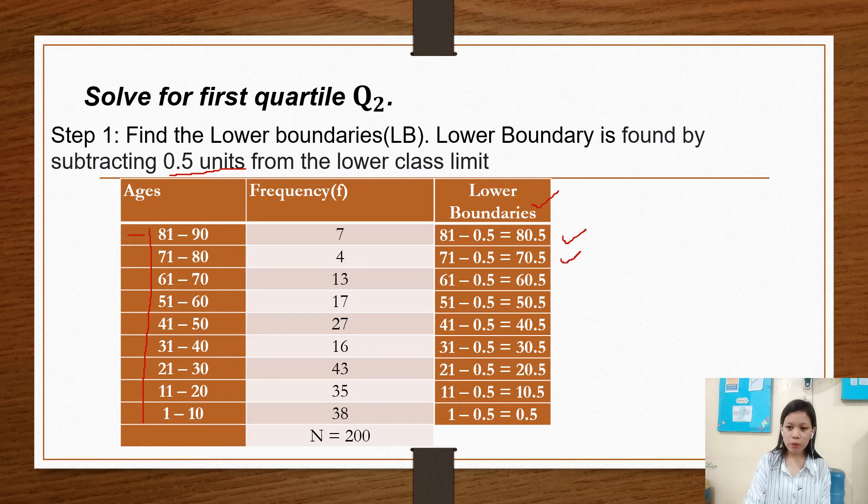71 minus 0.5 is 70.5, 61 minus 0.5 is 60.5, 51 minus 0.5 is 50.5, 41 minus 0.5 is 40.5, 31 minus 0.5 is 30.5, 21 minus 0.5 is 20.5, 11 minus 0.5 is 10.5, 1 minus 0.5 is 0.5. So those are for finding lower boundaries.